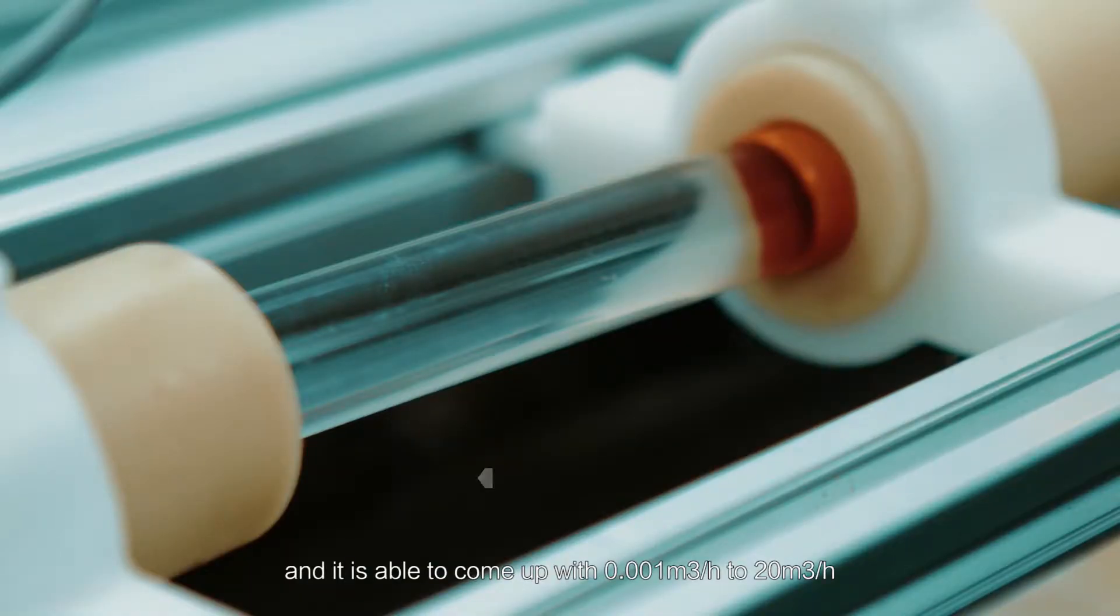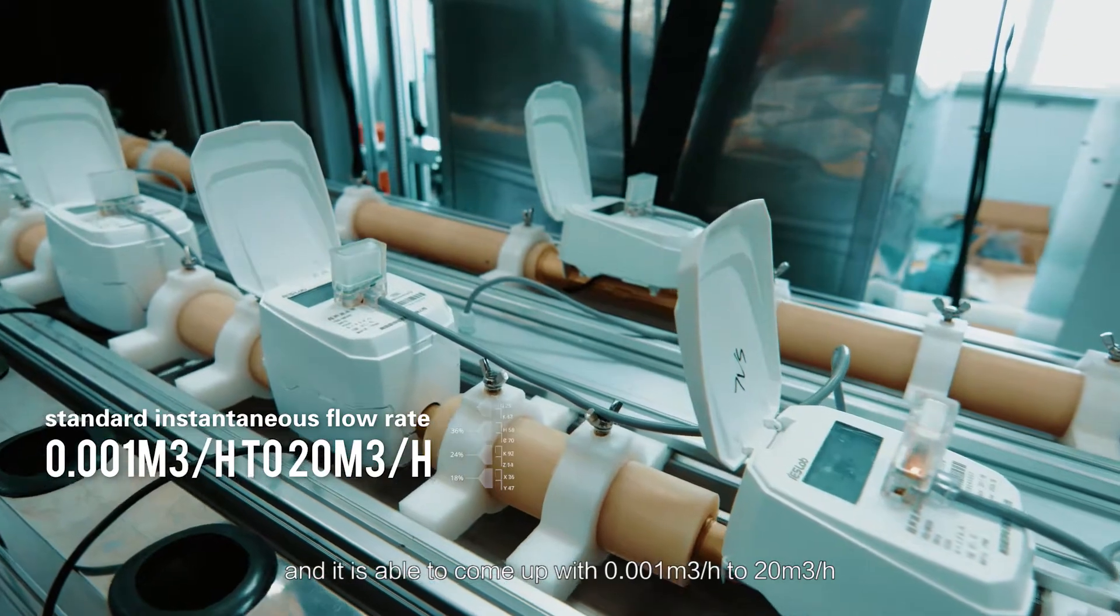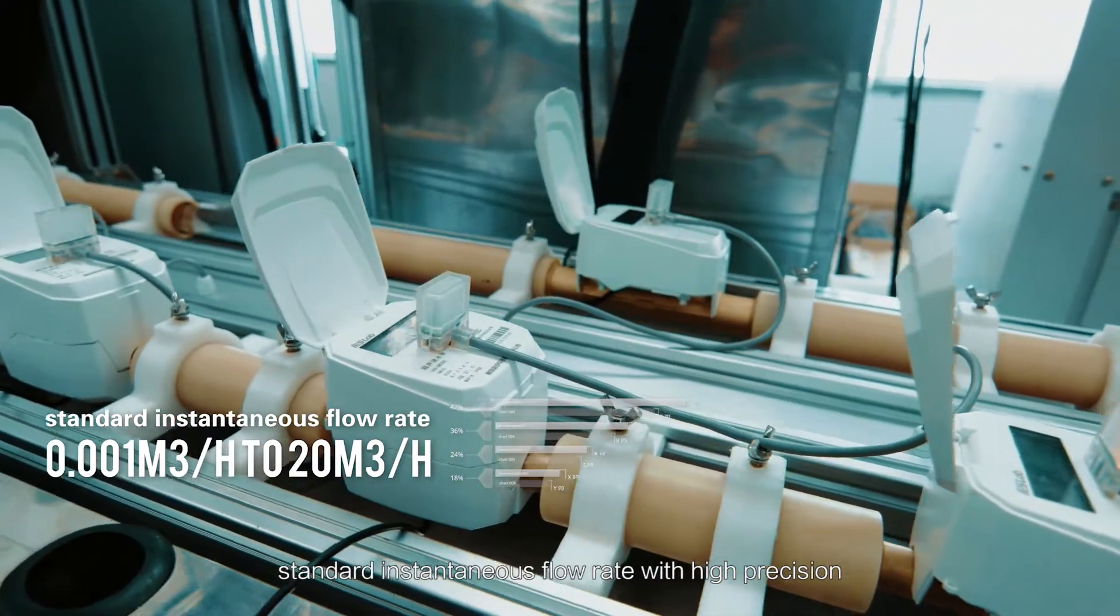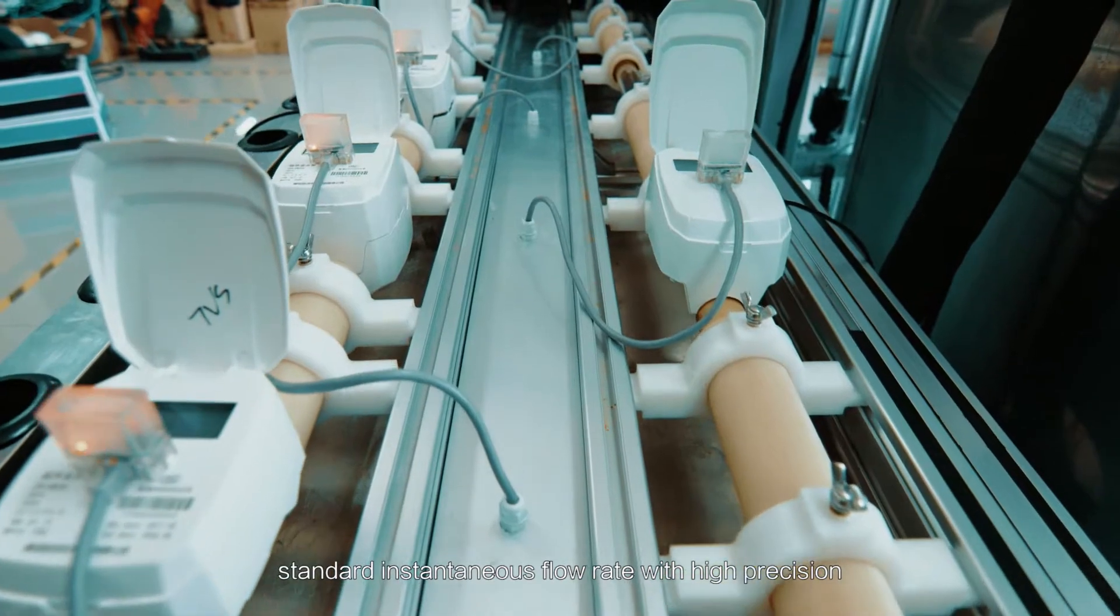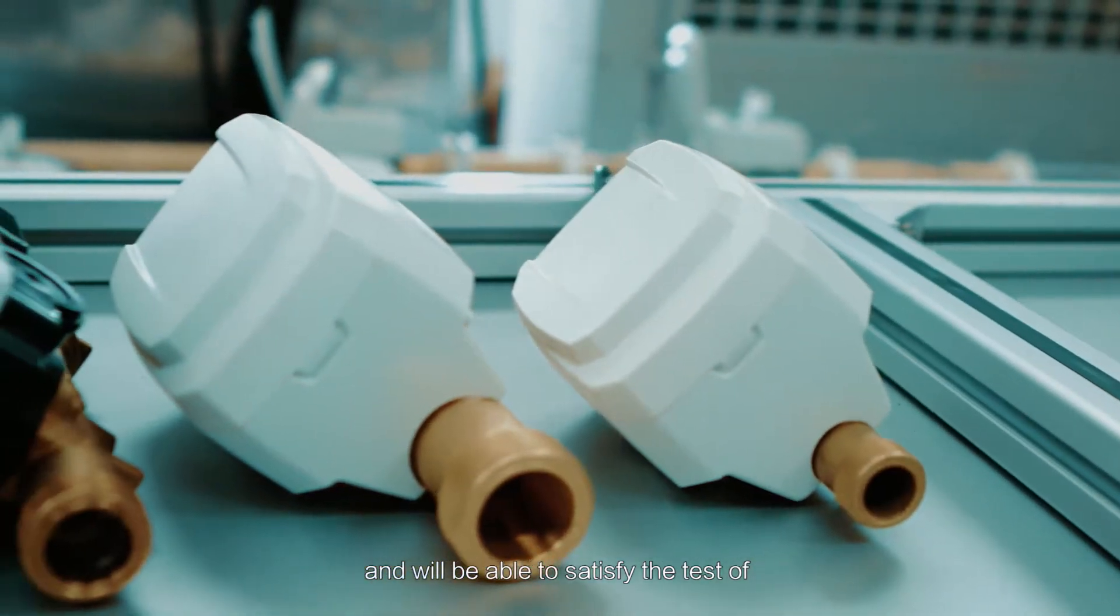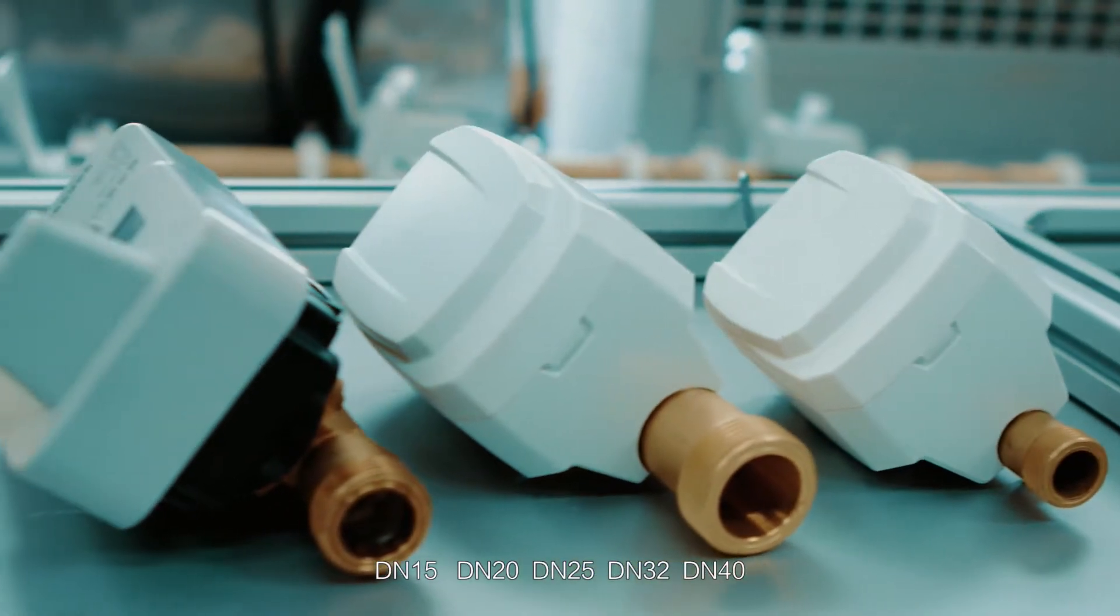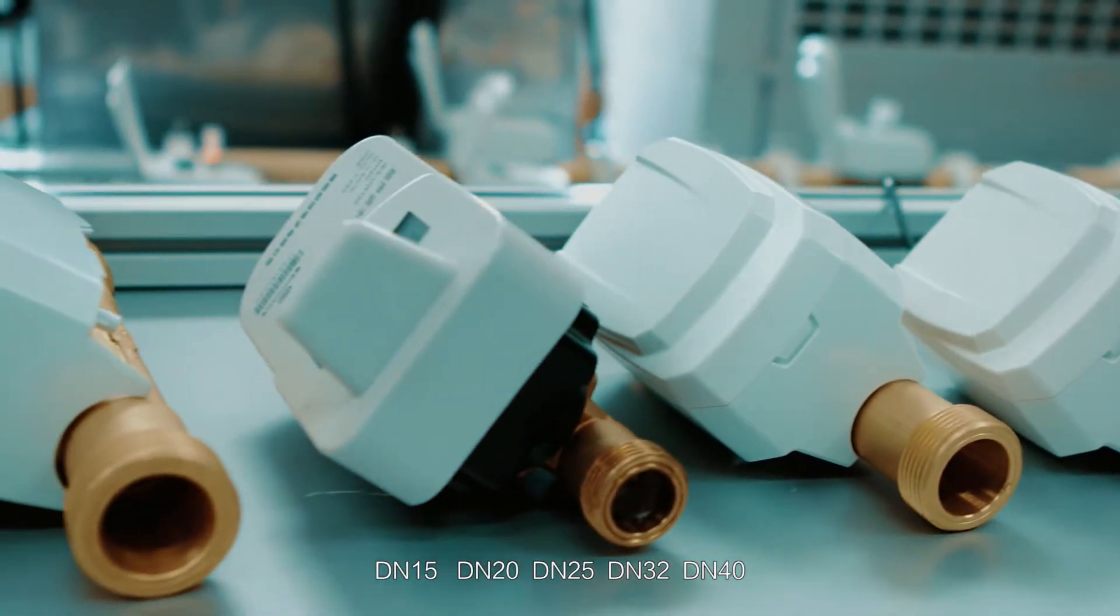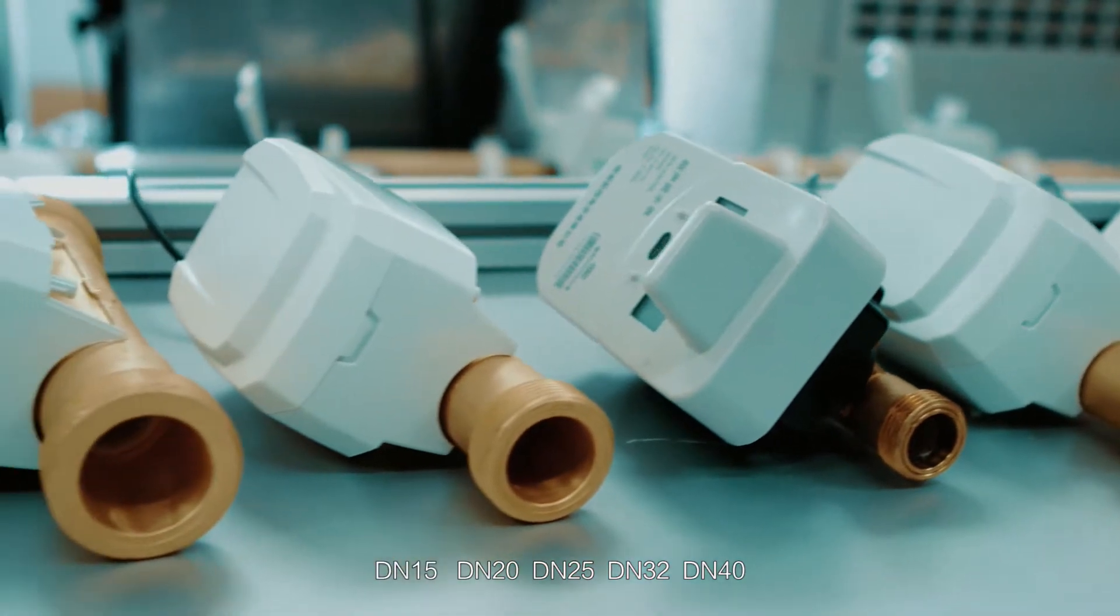The device is able to produce 0.001 cubic meters per hour to 20 cubic meters per hour standard instantaneous flow rate with high precision and good consistency. It will be able to satisfy the test of DN 15, DN 20, DN 25, DN 32, and DN 40 five different size ultrasonic water meters.